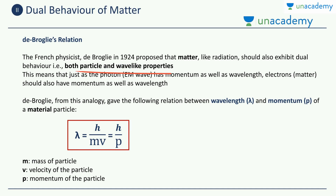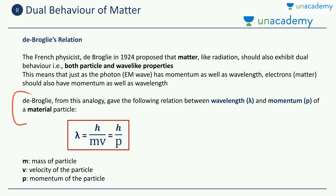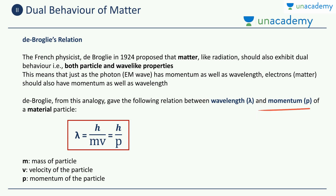This means that just as the photon — the photon is the particle of light — so it's an electromagnetic wave, and electromagnetic waves have momentum as well as wavelength. Similarly, electrons should also have momentum as well as wavelength. By electrons, I mean matter over here. So matter should also have some momentum as well as wavelength. De Broglie was the pioneer in formulating a mathematical equation which combines all this. From this analogy, he gave the following relation between the wavelength lambda and the momentum p of a material — it's not a wave, keep in mind that it's a material.